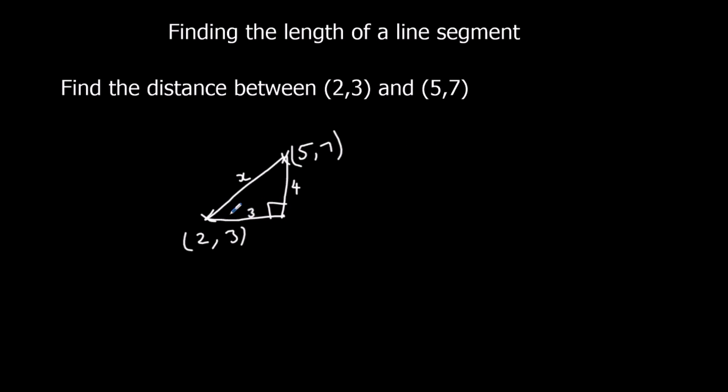And then we just do Pythagoras, so a squared plus b squared equals c squared. So 3 squared plus 4 squared is x squared. 9 plus 16 is x squared. 25 is x squared. X is the square root of 25, which is 5. So the distance between these two points is 5.